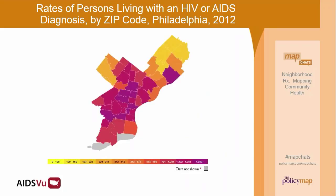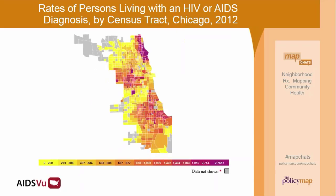This is a zip code level slide showing rates of people living with HIV or AIDS diagnosis in Philadelphia by zip code. Maps like these have been used by researchers and program specialists who want to do HIV testing. Areas with large concentrations of people living with HIV are generally also areas where HIV testing resources are needed. Program researchers from Brown have used maps like these to figure out the specific neighborhoods in which door-to-door HIV testing should be done, in order to bring testing to the specific parts of the city in greatest need.